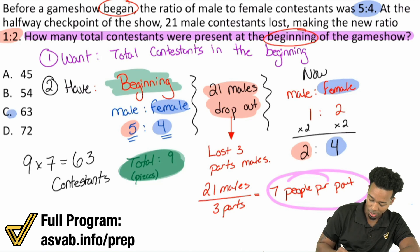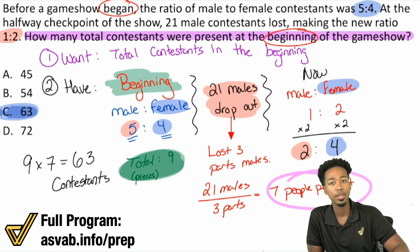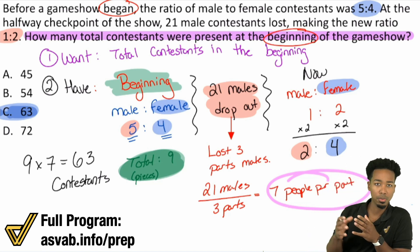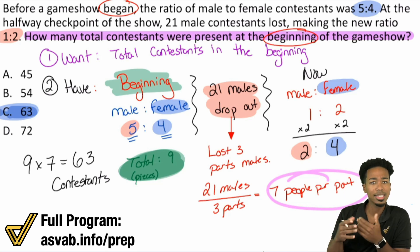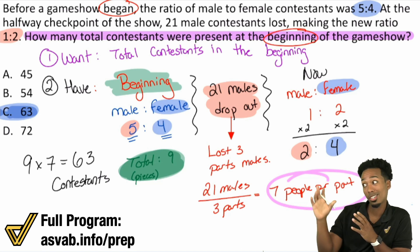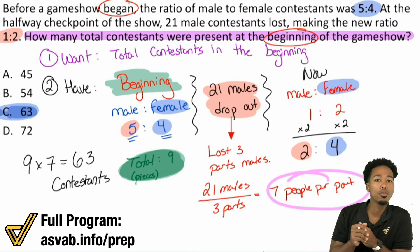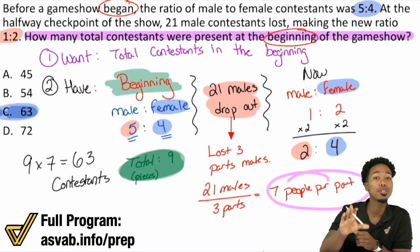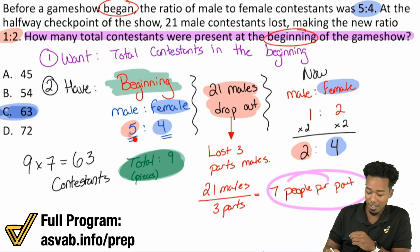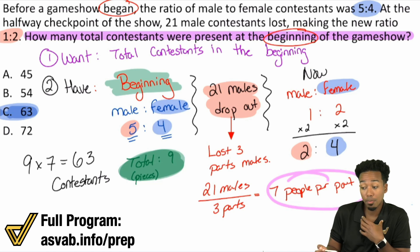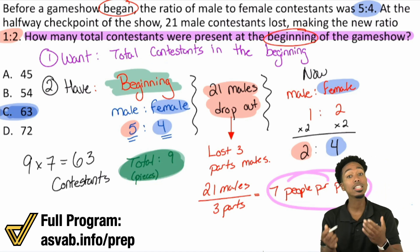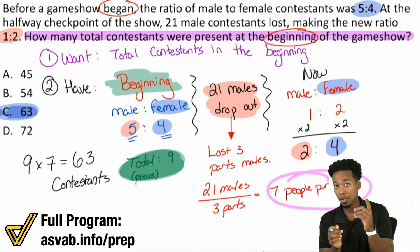The answer is C, 63 contestants. This is the main way to do this question. It's a challenge problem and I wanted to explain it fully from start to finish. There is another way using a system of equations, but if you can understand it through ratios, proportions, and totals, you're good. You have to understand totals to solve this problem. In the beginning, five to four gives nine total parts.